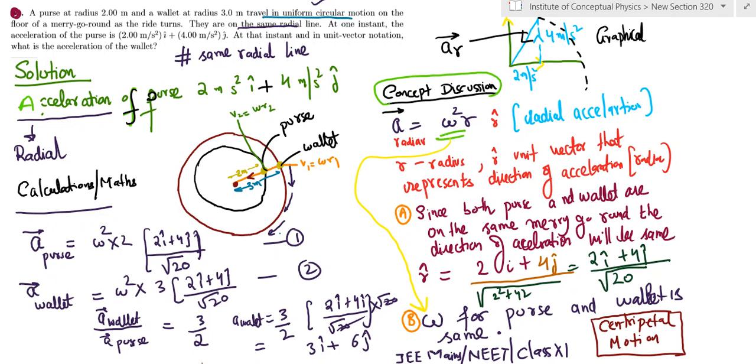I have underlined the main keywords in the question. One is uniform circular motion, and the other is that they're on the same radial line. In the diagram, two circles have been drawn.